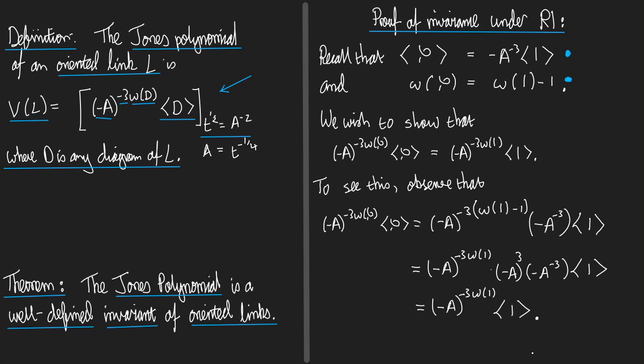So, this is why the Jones polynomial is well-defined. This is why it's invariant under R1. For R2 and R3, it's even simpler. Because remember that if I wrote you the equations equivalent to these ones here for R2 and R3, there wouldn't be any confusion there. The Kauffman bracket is invariant under R2 and the writhe is invariant under R2. So, it's obvious that the Jones polynomial is invariant under R2, similarly for R3.